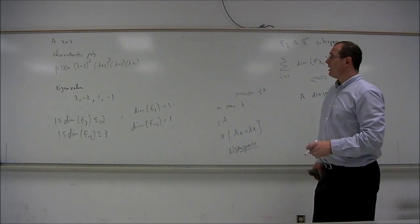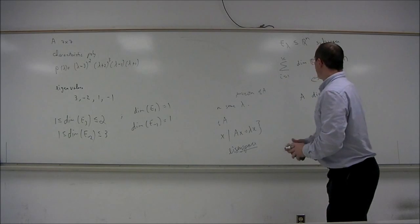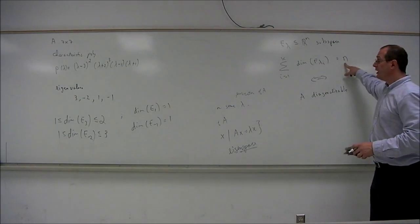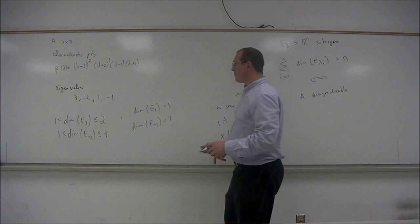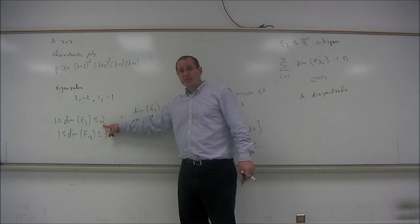So, is this matrix diagonalizable? Well, it is if the sum of the dimensions is 7 in this example. So, in order for the sum of the dimensions to be 7, the dimension of e3 would have to be the maximum possible 2.